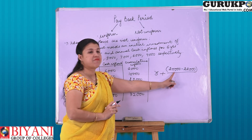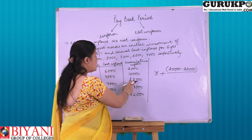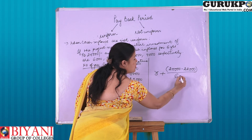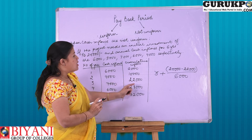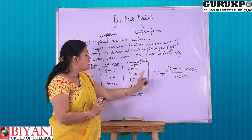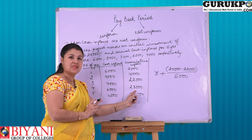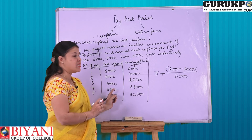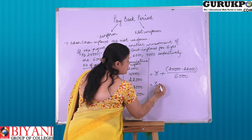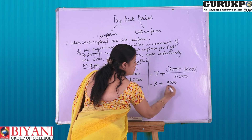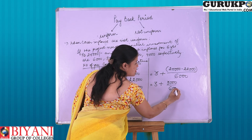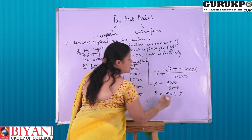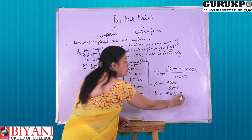The remaining 3,000 rupees is to be recovered in the coming year — the fourth year — and this amount is divided by the cash flow of the next year, which is 6,000. So our payback period is 3 plus (3,000 divided by 6,000), that is 3 plus 0.5 — meaning we are going to recover our 25,000 rupees in 3 and a half years.